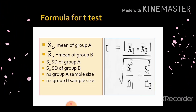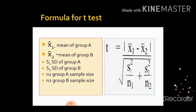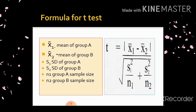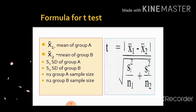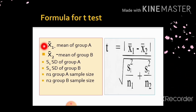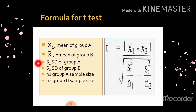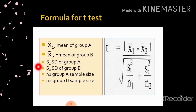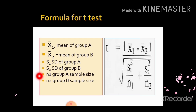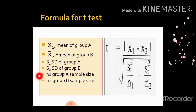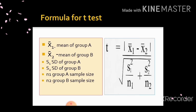Let us see the formula for the T-Test. T is equal to X1-bar minus X2-bar, divided by the square root of (S1² / N1) plus (S2² / N2). Here, X1-bar is the mean of Group A, X2-bar is the mean of Group B, S1 is the standard deviation of Group A, and S2 is the standard deviation of Group B. N1 is Group A's sample size — here it is 7 — and N2 is Group B's sample size, also 7.